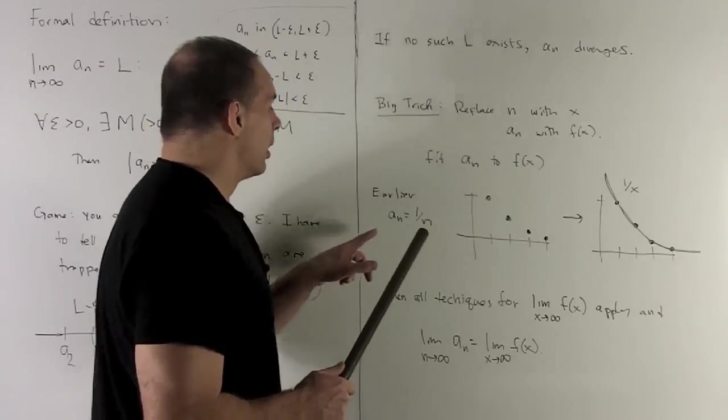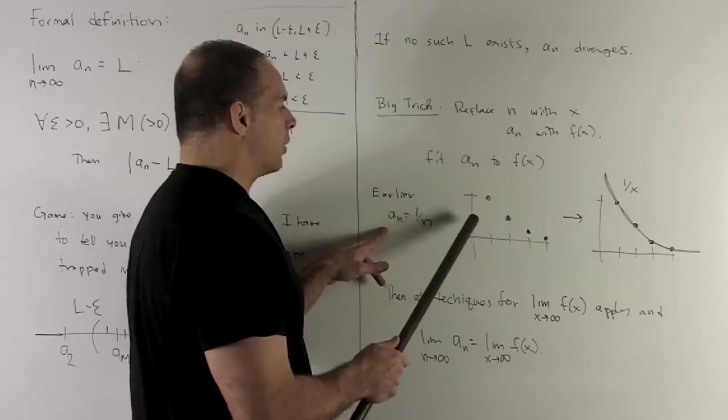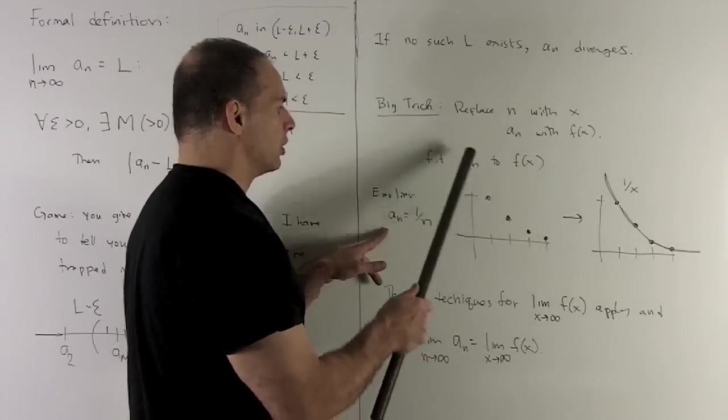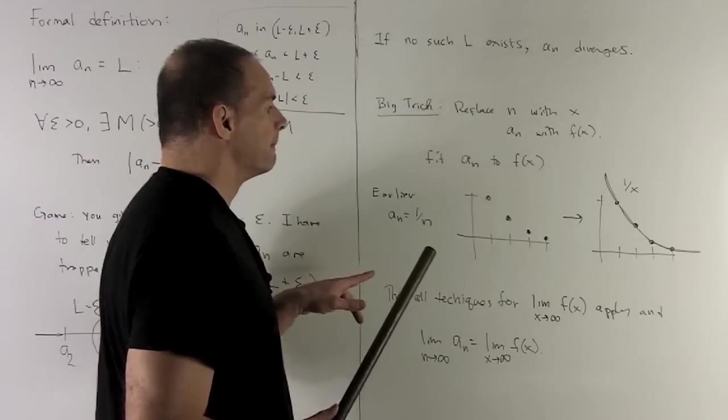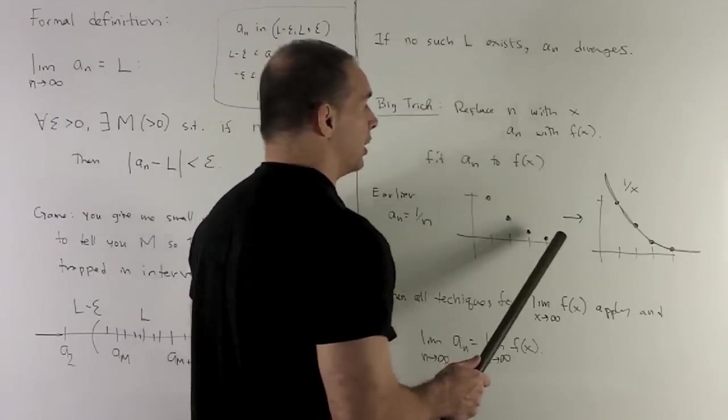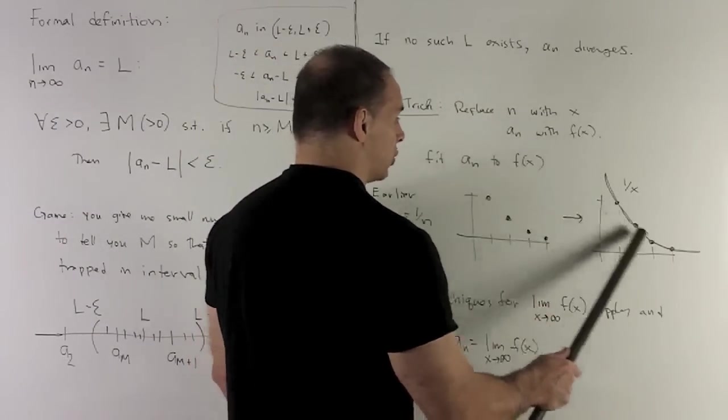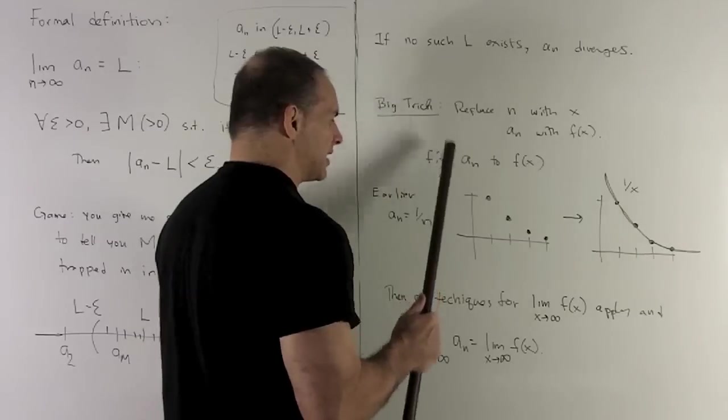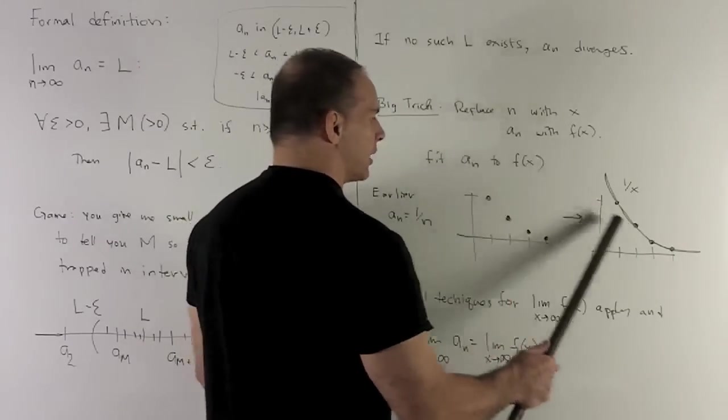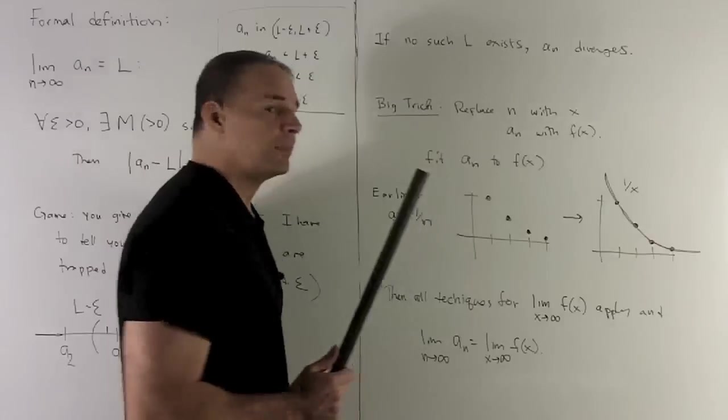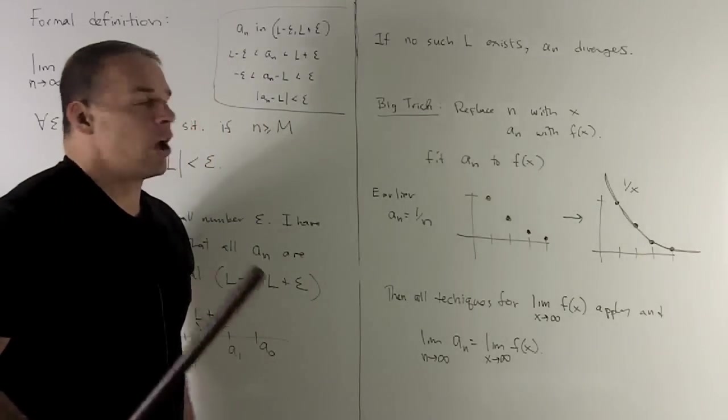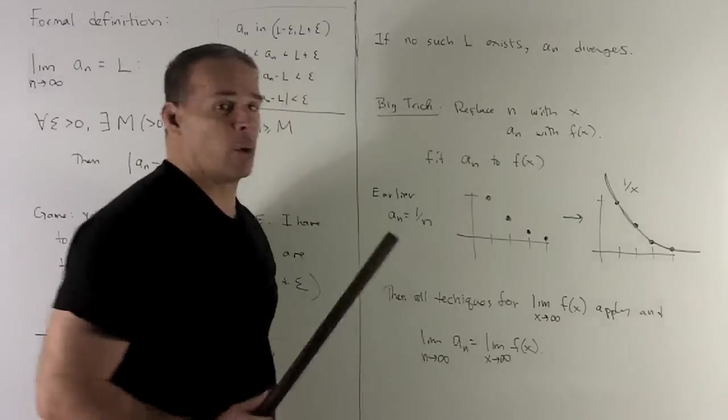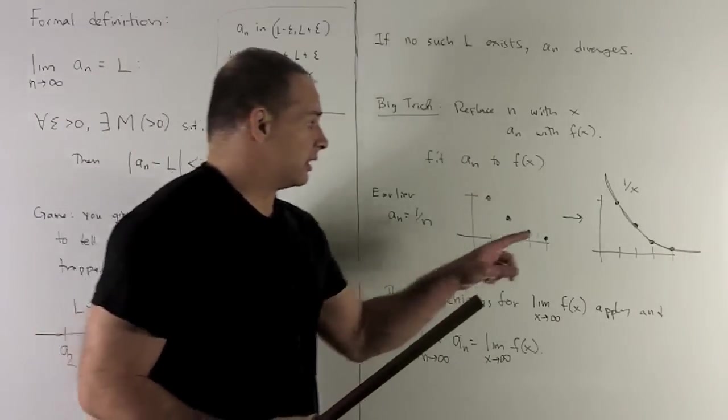So let's look at our picture. Before, the picture I had with n replacing my x-axis looked like this for a sub n equal to 1 over n. If I go to the function 1 over x, it's going to look like this. So we notice I have my sequence, but there's a function that just falls right on top of it. What this is going to mean is all the techniques for f of x when I go out to infinity in x are going to apply to getting the limit.